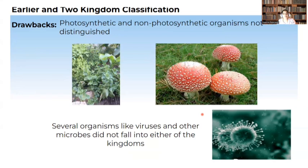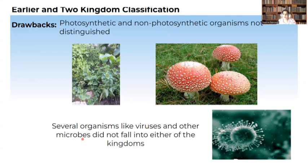Another drawback of the two-kingdom classification is that photosynthetic and non-photosynthetic organisms are not clearly distinguished, even though all are placed under kingdom Plantae. Some organisms have chlorophyll and can carry out photosynthesis, whereas some don't have chlorophyll and cannot carry out photosynthesis. Even organisms like viruses and microbes did not clearly fall into either kingdom.